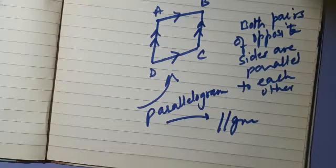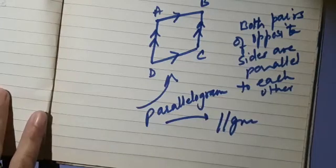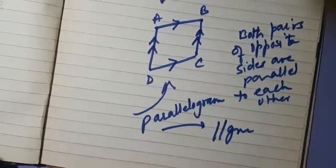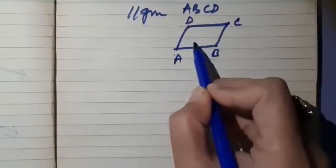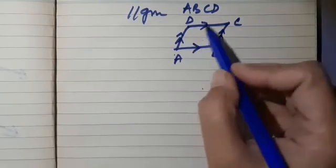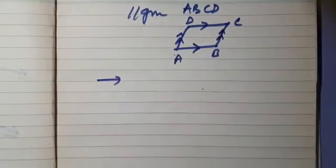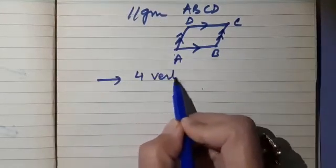Now let me take some information about parallelograms. A parallelogram is a quadrilateral, so it will have the properties of a quadrilateral. Let us list the properties. We write it as parallelogram ABCD. We draw it with both pairs of opposite sides parallel, represented with arrows to show parallel lines.